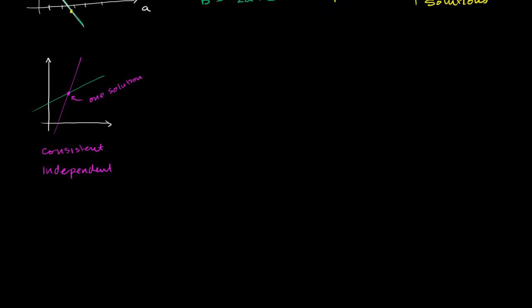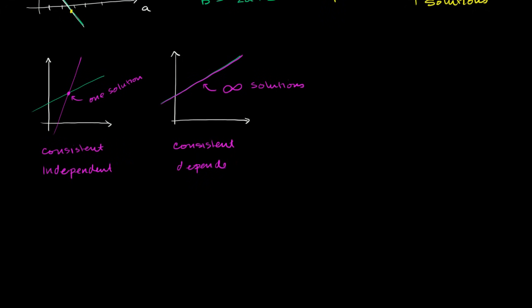Then you have the other scenario where they're consistent — they intersect — but they're essentially the same line; they intersect everywhere. If you graph both equations, it's actually the exact same line. So here you have an infinite number of solutions. It's consistent, but they're dependent equations — it's a dependent system.